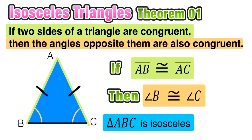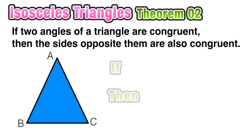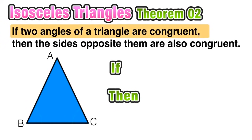The next isosceles triangle theorem says that if two angles of a triangle are congruent, then the sides opposite them are also congruent. This is kind of like the reverse of the theorem we just looked at. Again, if two angles of a triangle are congruent...